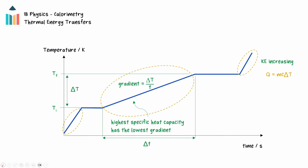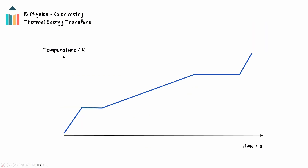Notice that the gradients of the sections on the graph relating to the solid, liquid and gas phases all have different slopes because the specific heat capacities of the different phases vary. When the substance is undergoing a phase change, the temperature remains constant and the gradient of the line is zero. Here the energy being transferred into the particles is increasing the distance between the particles, increasing their potential energy. The relationship q equals mL applies here.